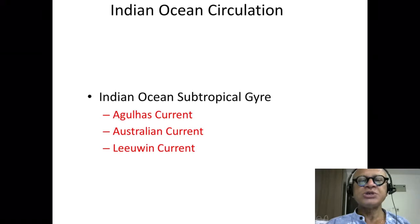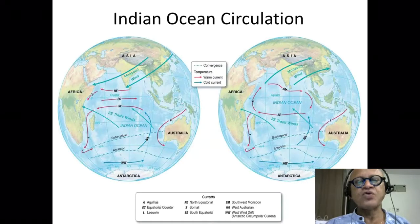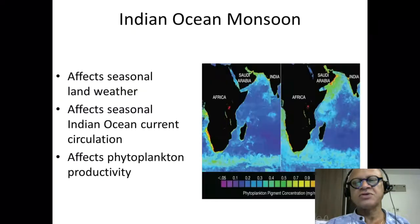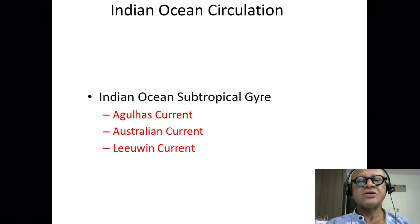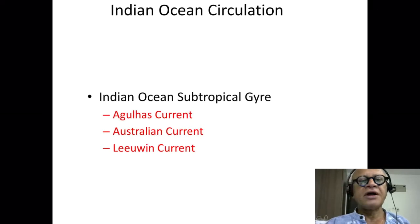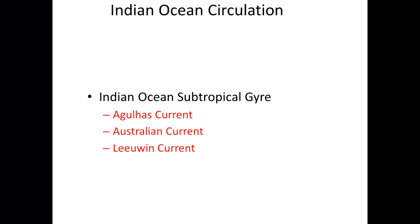In summary, Indian Ocean circulation features the Agulhas current between Madagascar and the East African coast, the West Australian current, and the Leeuwin current. That covers the current patterns for the Indian Ocean. We now have some understanding of the monsoonal circulations, which we will combine with other aspects of biology, physics, and chemistry as we go forward.